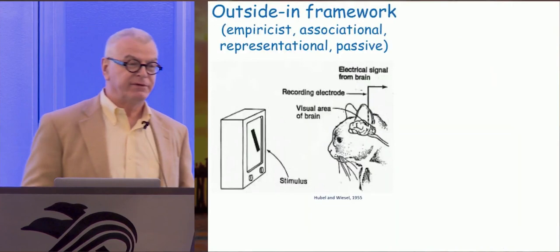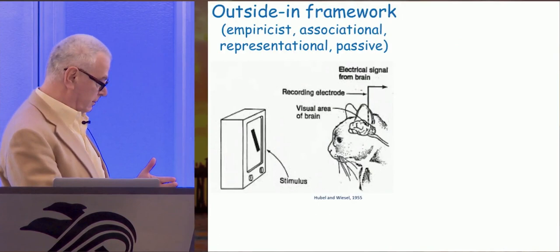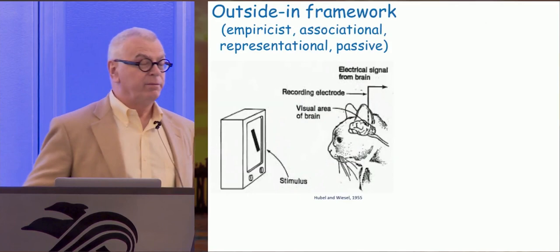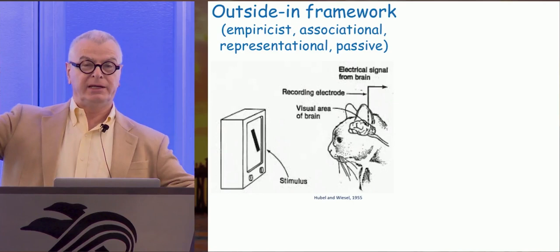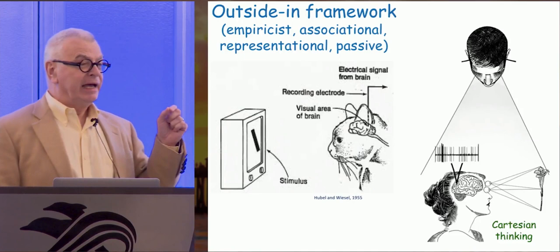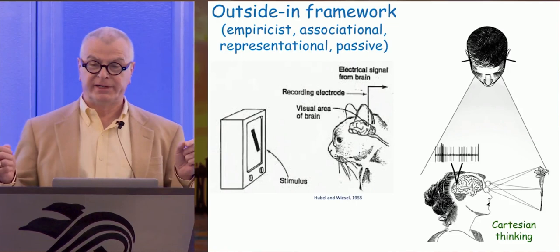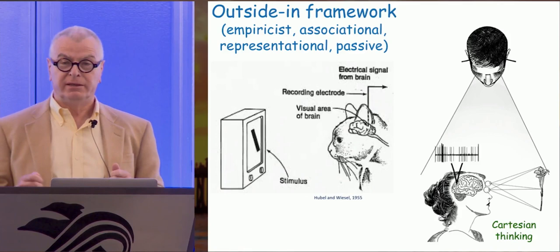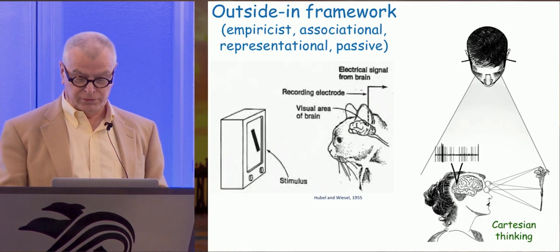This is the paradigm that most of us have been working on for a very long time. You give a signal and you record from the brain and look at the relationship between what's happening outside the brain and inside the brain, and you get a correlation. The problem is that the arbitrator is the experimenter.